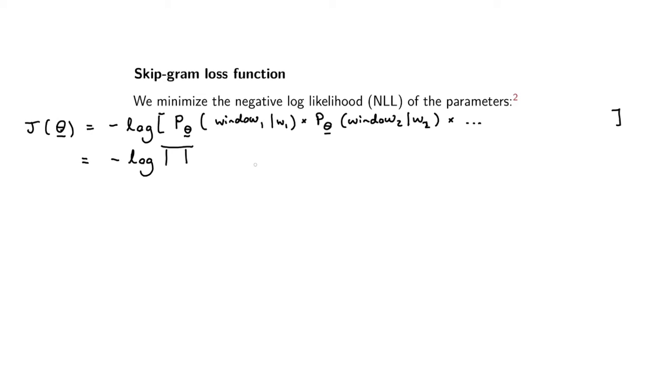We can write that out more concisely using product notation. We're taking the product starting with the first center word up to the last center word, and we've got p of theta given the context words in window associated with little t and then center word little t. This is all based on that first assumption that each of the windows is i.i.d.